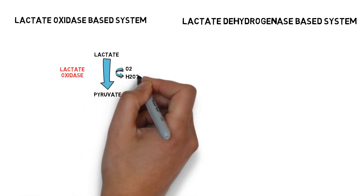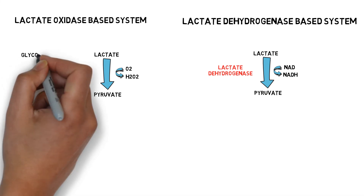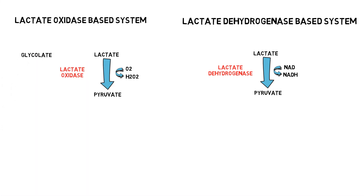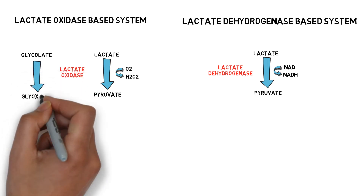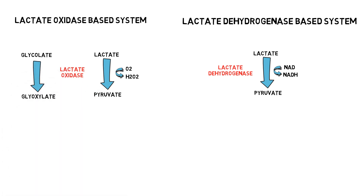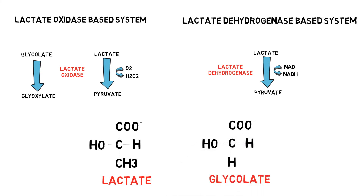The lactate dehydrogenase system converts lactate into pyruvate and produces NADH, which is also detected by the system. Interestingly, glycolate — a metabolite of ethylene glycol — can utilize lactate oxidase to produce glyoxylate and also produce hydrogen peroxide that can be detected by the lactate oxidase system. This is mainly due to the similar structure between glycolate and lactate.